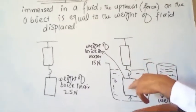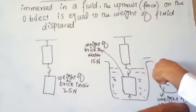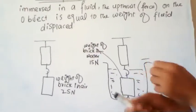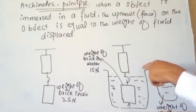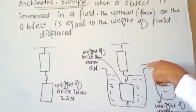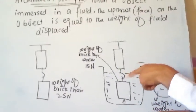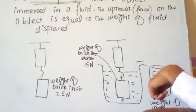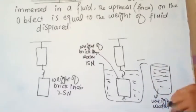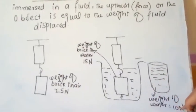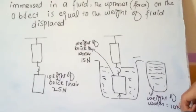The brick displaces some water when it is immersed in the fluid. The displaced water will be collected in a glass. If we weigh this collected water, its weight is 10 Newton.